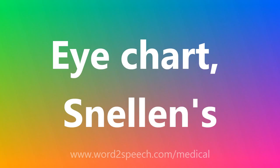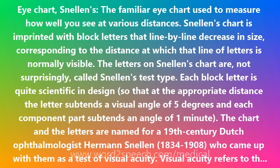The I-Chart, or Snellen's chart — the familiar chart used to measure how well you see at various distances. Snellen's chart is imprinted with block letters that line by line decrease in size, corresponding to the distance at which that line of letters is normally visible.